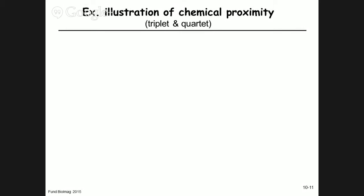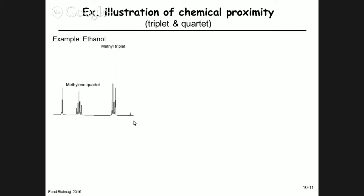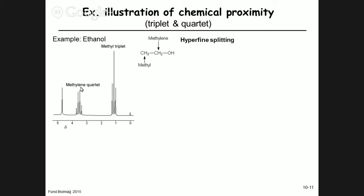Things are not just about counting intensities — we have additional information about chemical proximity in the spectrum. Looking at a more modern measurement of ethanol, we now see not just a methylene signal but a methylene quartet, and a methyl triplet. This is a hyperfine splitting that carries additional information about the chemical structure of the molecule.